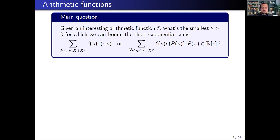We'll mostly be looking at this more general case of polynomial phase twists. The key parameter here is the interval length x to the theta — so how small can you make theta? It depends on your function, but that's the parameter we try to minimize. The bounds we want depend on whether your polynomial is major arc, in which case you can get an asymptotic, or minor arc, in which case you expect cancellation.